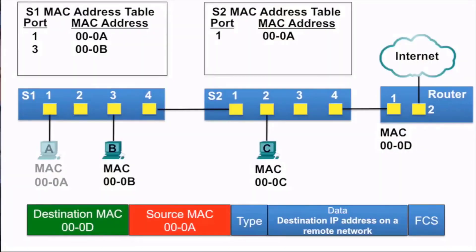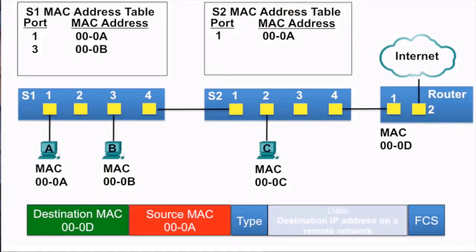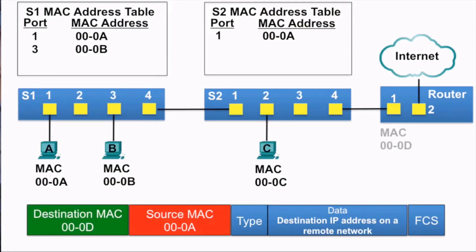In this video, PCA is going to send a packet to the internet because the destination IP address is on another network. The source MAC address is that of PCA. The destination MAC address is that of the router, 000D. The Ethernet frame is sent to switch S1.